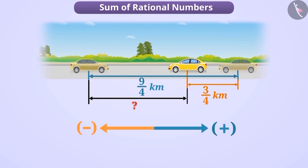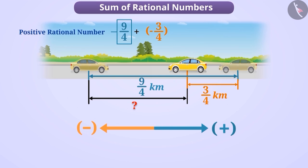Here we have to sum the distances covered in both cases. In mathematics, we will denote this by 9 by 4 plus minus 3 by 4. The distance of 9 by 4 km is in the right direction, so it is denoted by a positive rational number. While the distance of 3 by 4 km is in the left direction, so it is called a negative rational number.